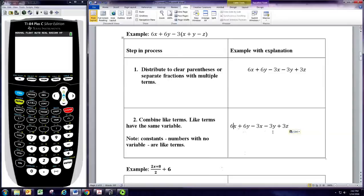The two x terms can be combined, 6x and negative 3x. So, that would be 6 minus 3 would be 3x. And then 6y and negative 3y. That's 6 minus 3 is 3y. And at the end we have 3x plus 3y plus 3z.